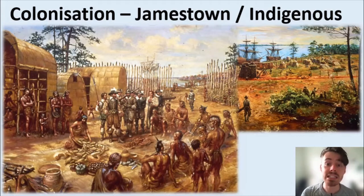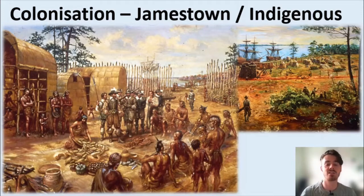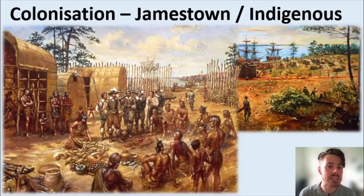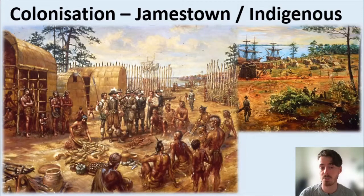A really good example of that is Jamestown. Jamestown was the first settlement of the first colony in Virginia — Virginia being named after Elizabeth the First, which tells you the time period. In the 1500s it was a settlement established by Sir Walter Raleigh, basically one of those explorers like John Cabot.